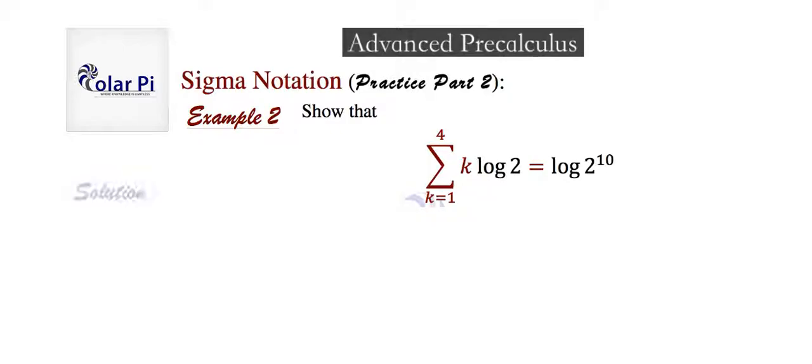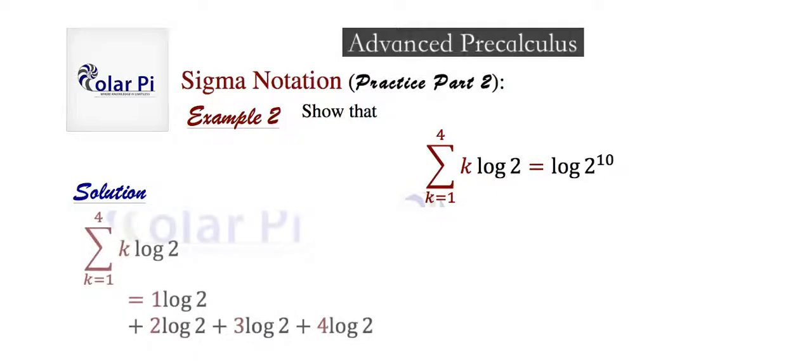To start, we're going to work with the left-hand side, and that's the side involving sigma, and that's what this is about after all. From what we know of sigma, we know that this is equal to 1 times log of 2 plus 2 times log of 2 plus 3 log 2 plus 4 log 2, and so all of this is equal to that.